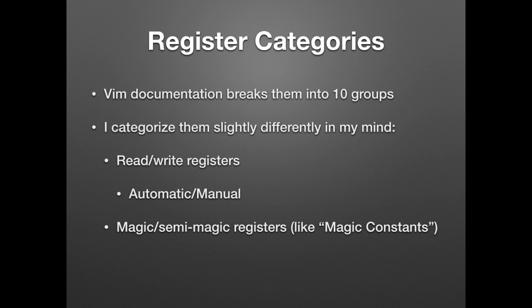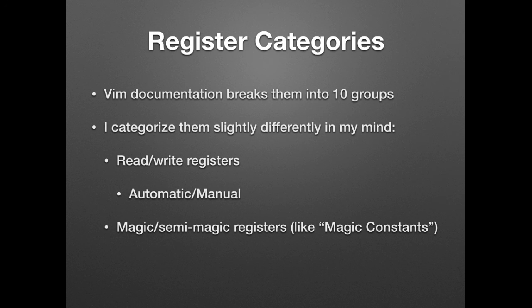There are registers I'd call magic constants — these reflect state about VIM itself. VIM writes into them; you don't write into them. You can use them to interrogate the current state of VIM. If you're familiar with Perl, it's similar to those magic constants like __FILE__, which tells you what file the current line is in, or __LINE__, which tells you what line you're on.